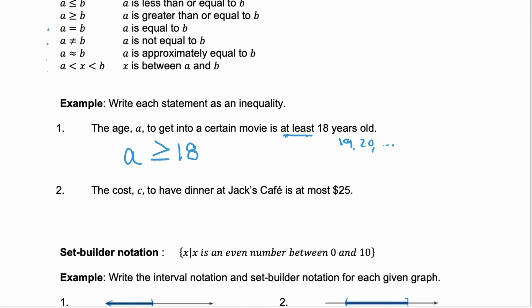In example two, we're told the cost c to have dinner at Jack's Cafe is at most $25. Our two key pieces of information are the variable c and $25. Then we're told at most. Well, at most tells us it can be equal to $25 because we spend $25 at Jack's Cafe, but at most $25. So we can't spend more than 25. It needs to be less than or equal to $25 for the cost of dinner.